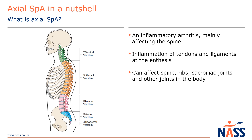And as you can see on this image, the sacrum, which is highlighted in blue at the base of the spine, connects to the pelvis on either side. These two joints are called the sacroiliac joints, and many people with axial SpA experience inflammation here.